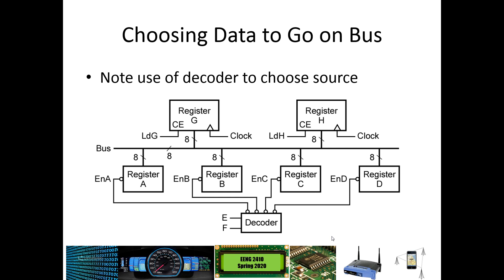Here is an example with more than just register A and register B — we can use a decoder. With this decoder, we have an enable on each register, and depending on what we put into E and F: 00 enables A, 01 enables B, 10 enables C, and 11 enables D. That puts all eight bits of the selected register out onto the bus, depending on which one is selected using the decoder.